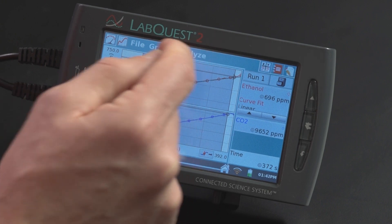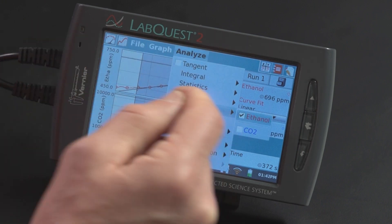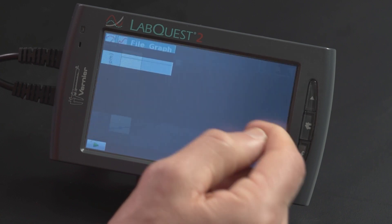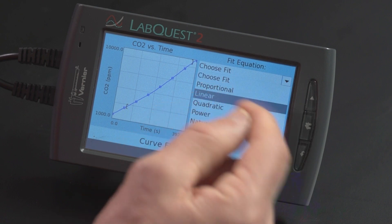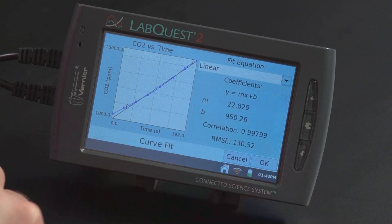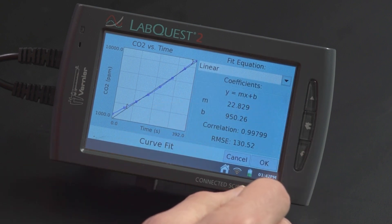And then I can do the same thing for the CO2. I just go back to Analyze, Curve Fit, select CO2, pick my fit, which for most things that we do in biology is going to be Linear. And you can see the slope is about 22.